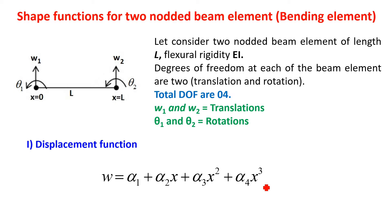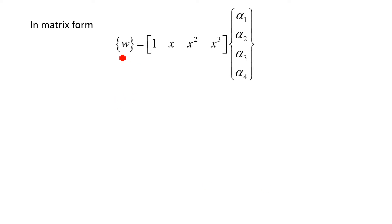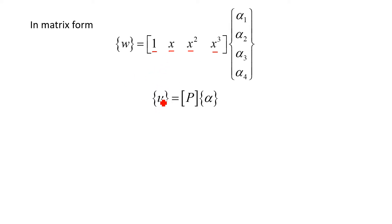If you write down this equation W in matrix form, you get W equal to a row vector of Pascal triangle elements multiplied by a column vector alpha 1 to alpha 4. This row vector is called the parametric matrix P, and the column vector is alpha.